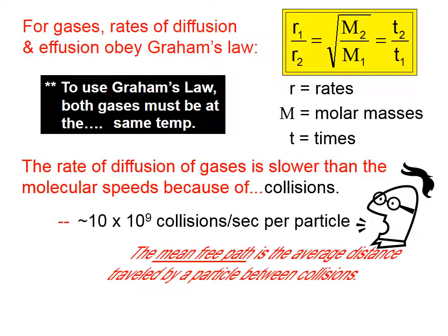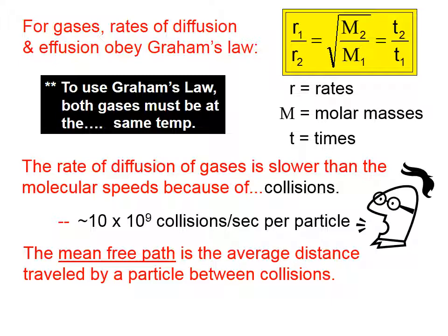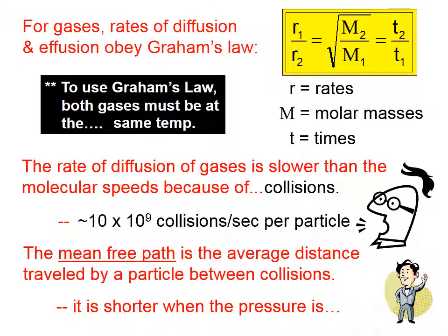The mean free path is the average distance traveled by a particle between collisions. The mean free path is shorter when the pressure is high. That is, when the particles are compressed closer to each other, obviously the mean free path will be shorter.